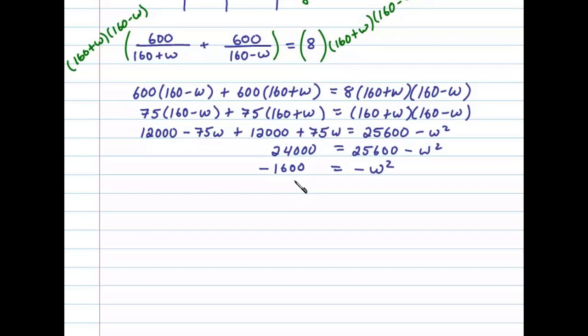And then multiply both sides by negative 1. We can see at this point, we can take the square root of both sides or apply the square root property. In that case, we'll get plus or minus 40 equals W.